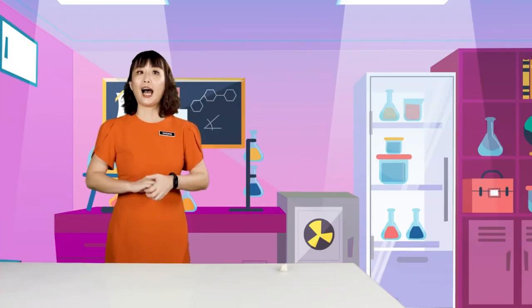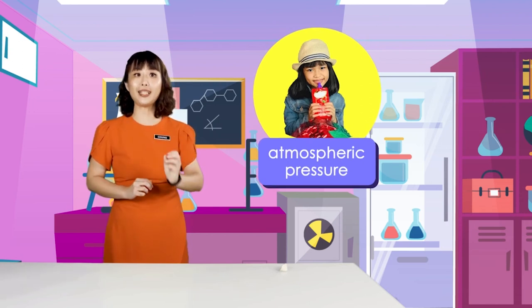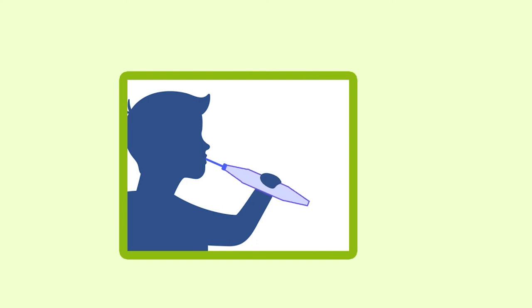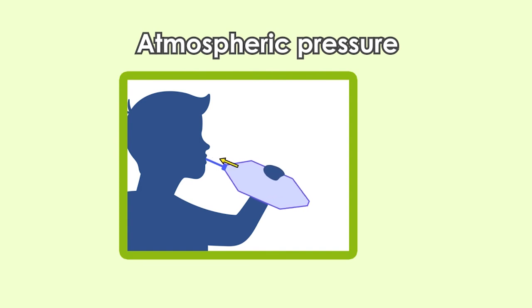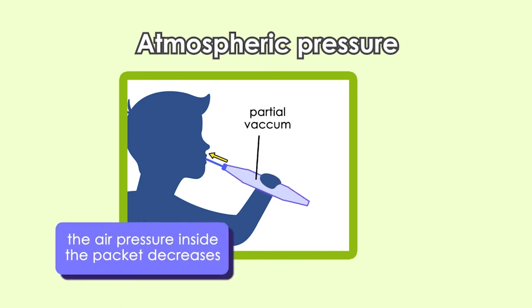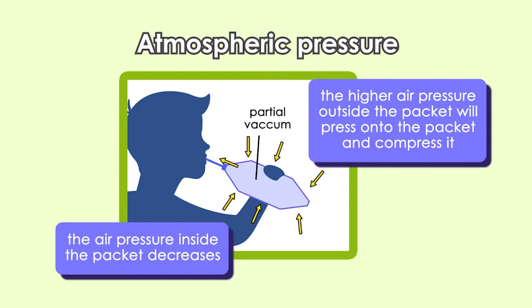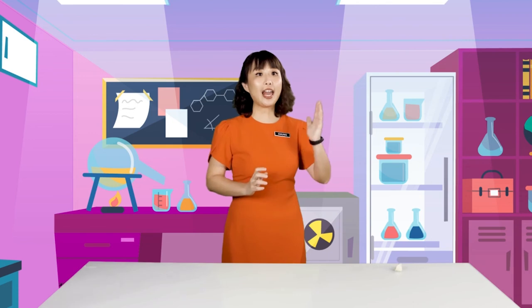Boys and girls, I'm sure you will have drunk a packet drink, like what this girl in the picture is drinking from. When the drink is sucked out of the packet drink, the packet will compress as shown in the picture. Can you tell me what causes the packet to compress? Yes, it is caused by the action of atmospheric pressure. When the drink is sucked out, there will be a partial vacuum inside the packet, and so the air pressure inside decreases. When this happens, the higher air pressure outside the packet will press onto the packet and compress it.